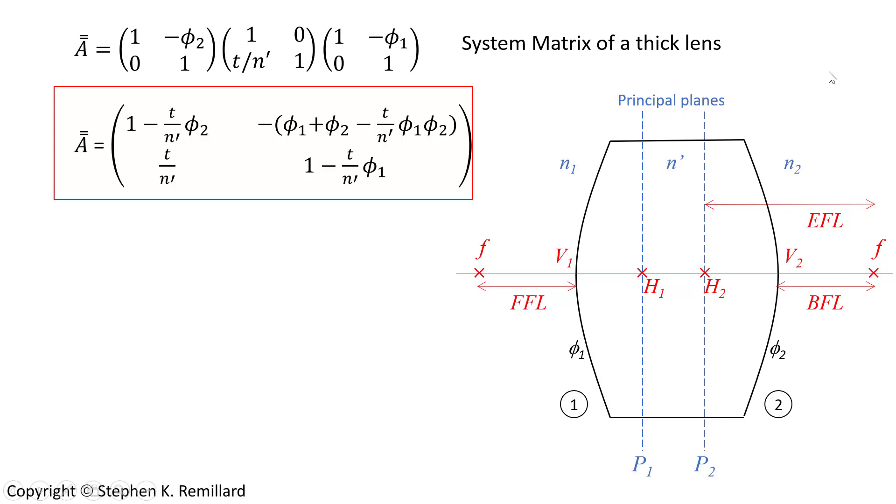Now if you inspect this matrix closely, you might recognize something about entry one, two, that is row one, column two, a sub one, two. Do you recognize what's in these little parentheses here? You might recognize that as the refracting power of the lens. And in fact, it is.